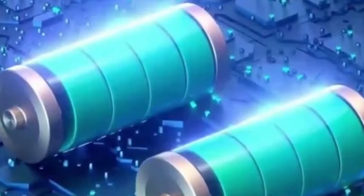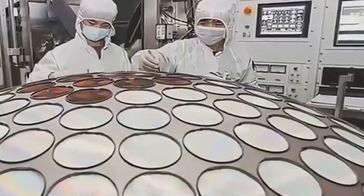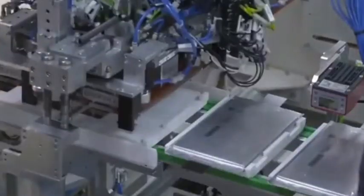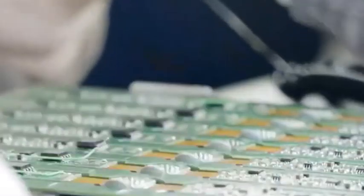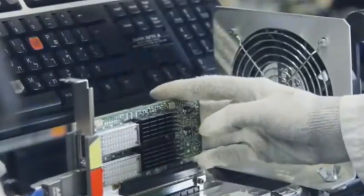Take chip design as an example. China used to follow others, but now China can not only catch up, but also be at the forefront. For example, Huawei already has world-class Kirin chips. Technological progress has enabled China to say no to high-priced chips purchased from abroad.